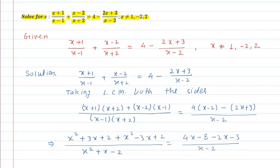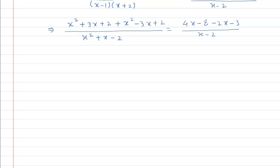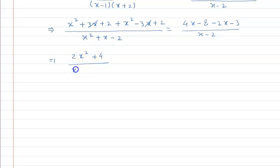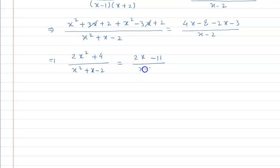Now let us simplify further. We can see that 3x and minus 3x cancel out. This implies that x squared plus x squared gives 2x squared, plus 4, with denominator x squared plus x minus 2, is equal to 2x minus 11, divided by x minus 2.